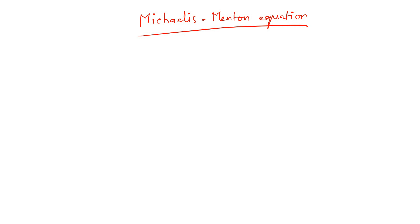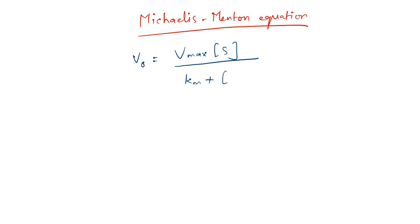Let me start by showing you the equation itself. The equation is: v0 is equal to Vmax into S upon Km plus S. This is the equation which was derived by Michaelis and Menten, and we have to understand what this equation means.